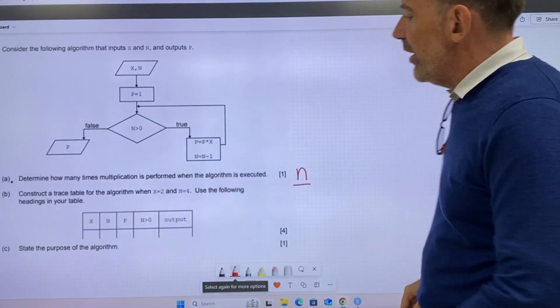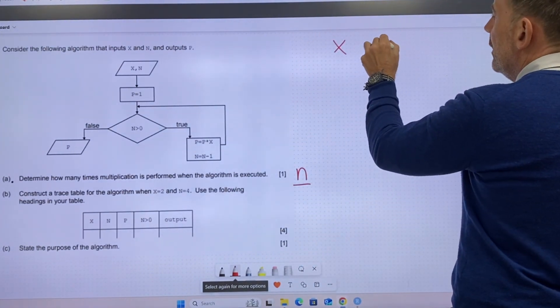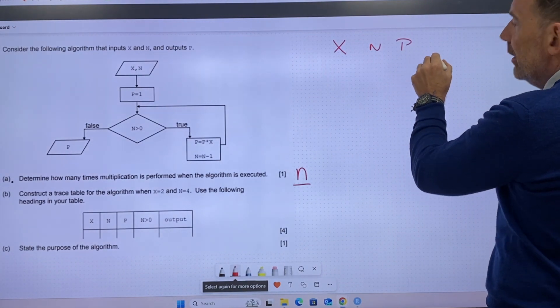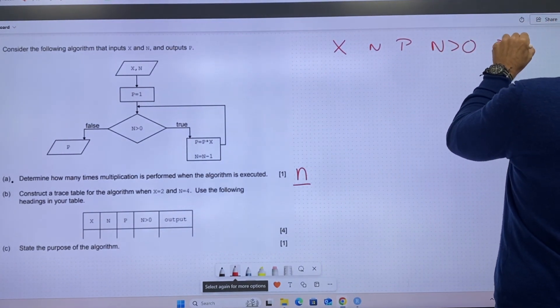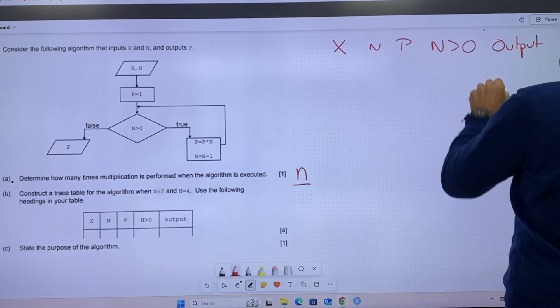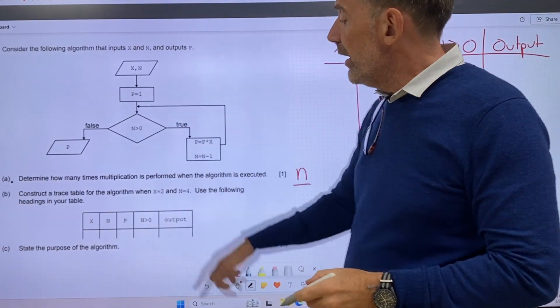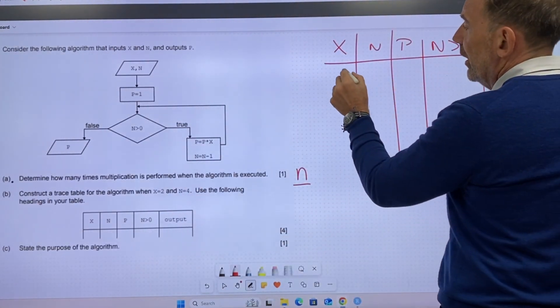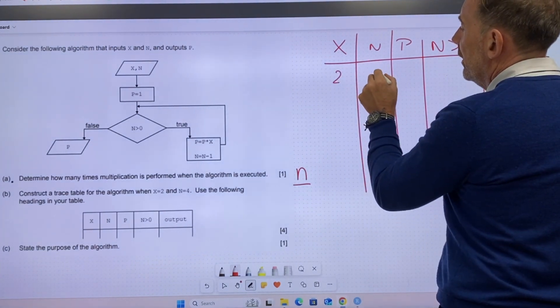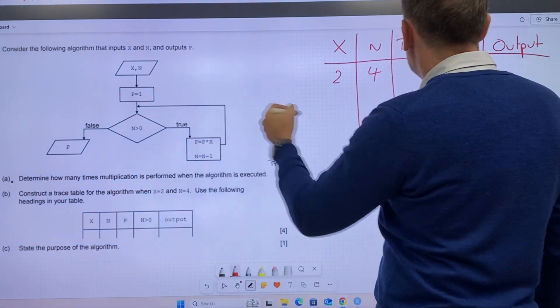Part B is construct the trace table. So there we go. x and n, p, n is greater than zero, and then we're going to output. We can enter these values straight away. So x equals two, n equals four. P equals one.